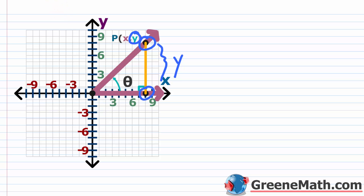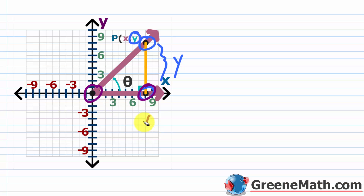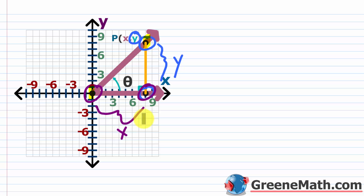The horizontal distance is x, since it's x minus 0. And the distance from the origin to the point — the hypotenuse — we call r. We'll get more into why we call it r as we progress through the course, but for right now we just call it r.